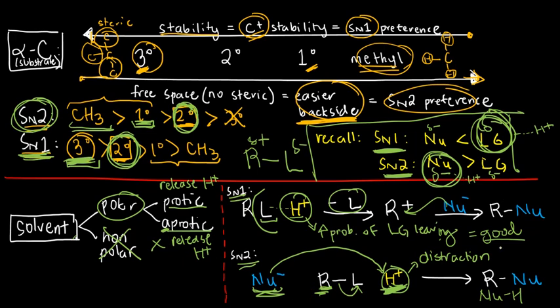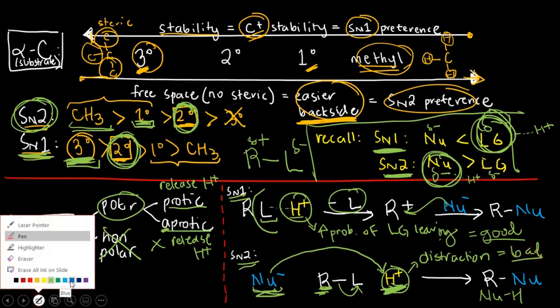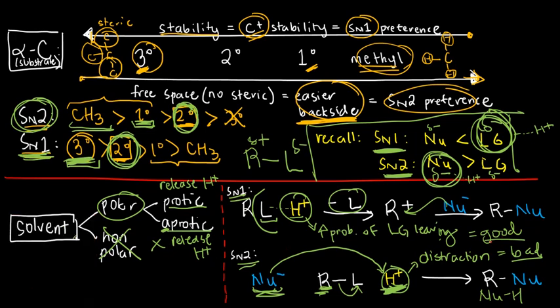So therefore, this is bad. You do not want protons in SN2. Therefore, we can already make the proper matching. So that means that I said protons are good for SN1. Therefore, I want protic solvents for SN1. Or for SN2, I do not want protons, so I need solvents that are aprotic.